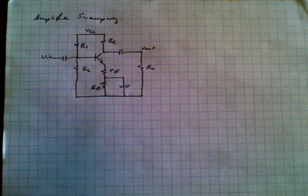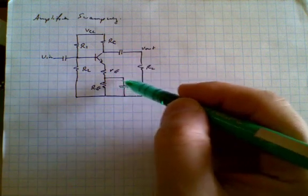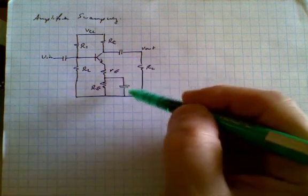Swamping is done by breaking the emitter resistor into two components, one of which is bypassed by means of a capacitor.